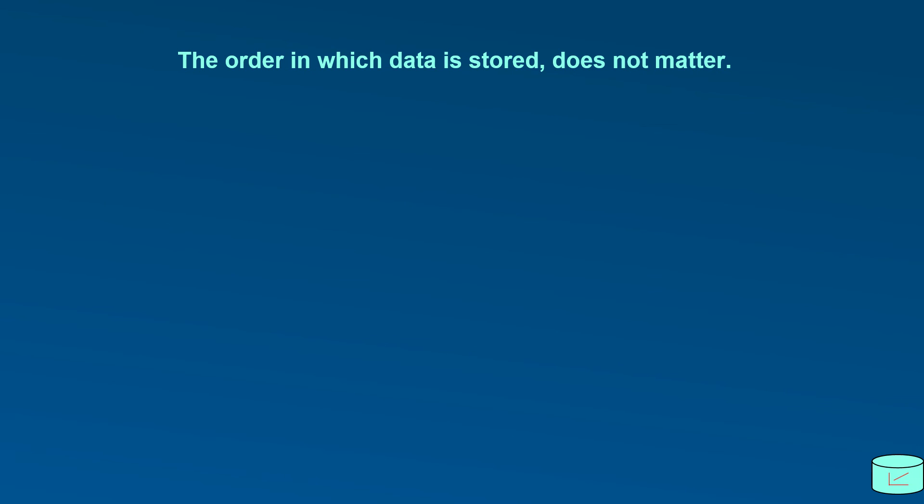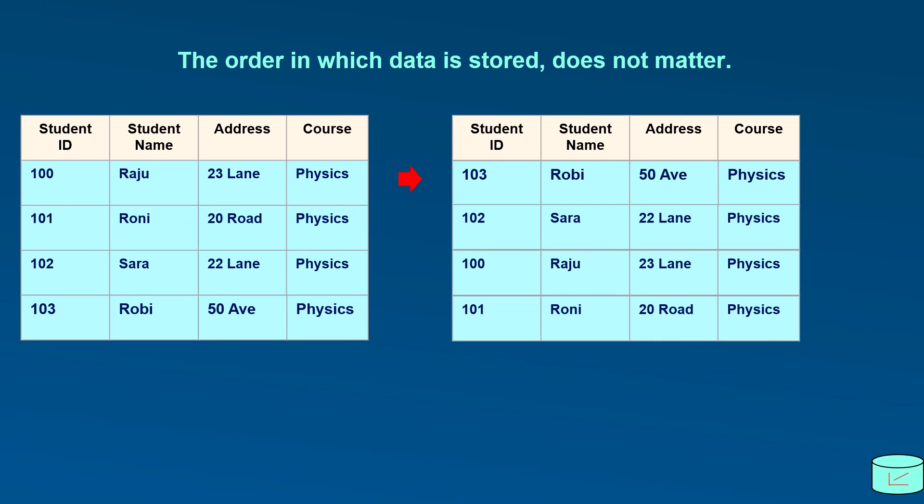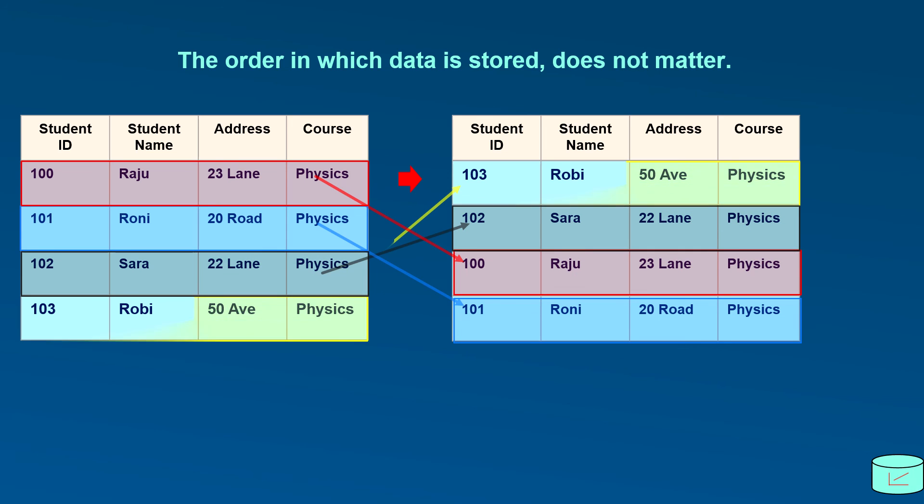Fourth condition. Data can be saved in any order. Using ascending and descending clause from the SQL language, data can be retrieved in any order from the table. Here you can see, all of the row positions of the student table at the left has been changed to different positions of the right table. This is acceptable.